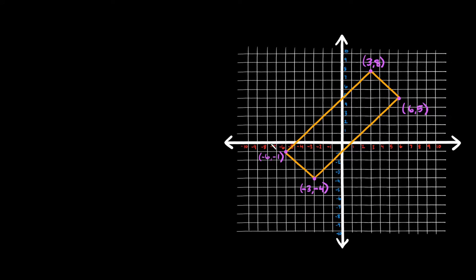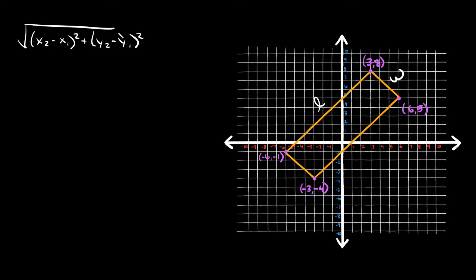Alright, here's our next example. We have a rectangle, and the area of a rectangle is the length times the width. Since it's at an angle and not lined up with the grid, we can't just count spaces like we did last time. So in this case we're going to have to use the distance formula: the square root of (x₂ − x₁)² + (y₂ − y₁)².